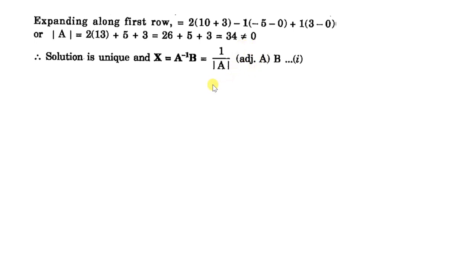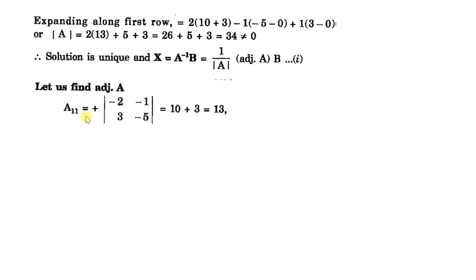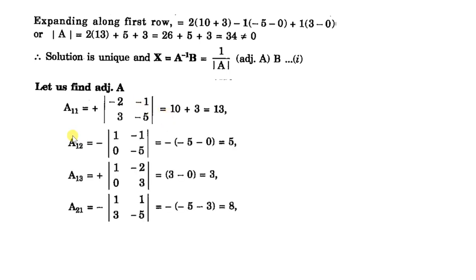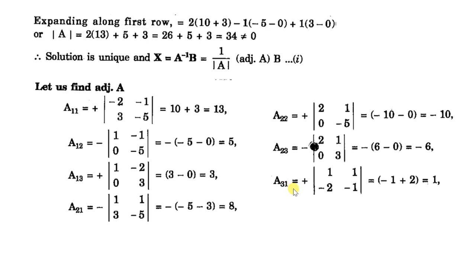We will find the cofactor of each element. For A11, you eliminate the first row and first column and find the determinant of the remaining elements. Similarly, for the cofactor A12, we put a minus sign because the sum of the suffixes is odd, and find the determinant of the remaining elements after leaving the second column and first row. It becomes minus 5 minus 0, then plus 5. Similarly, we find the cofactors of all the elements.